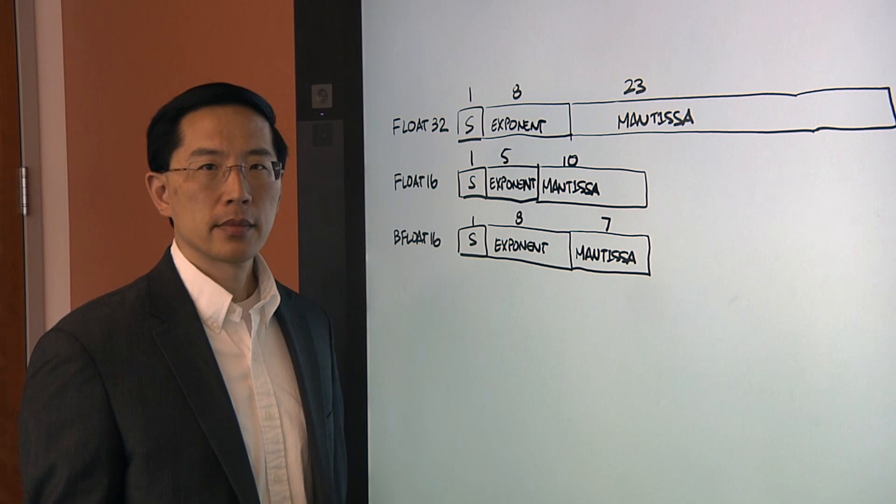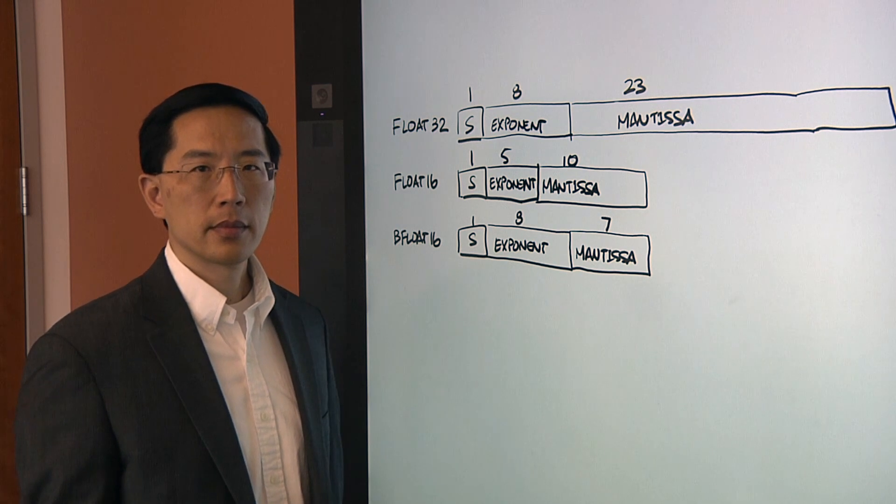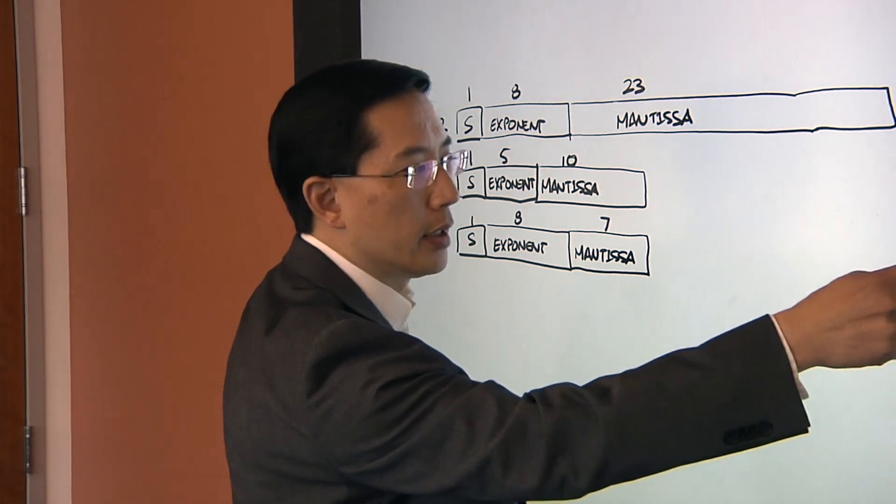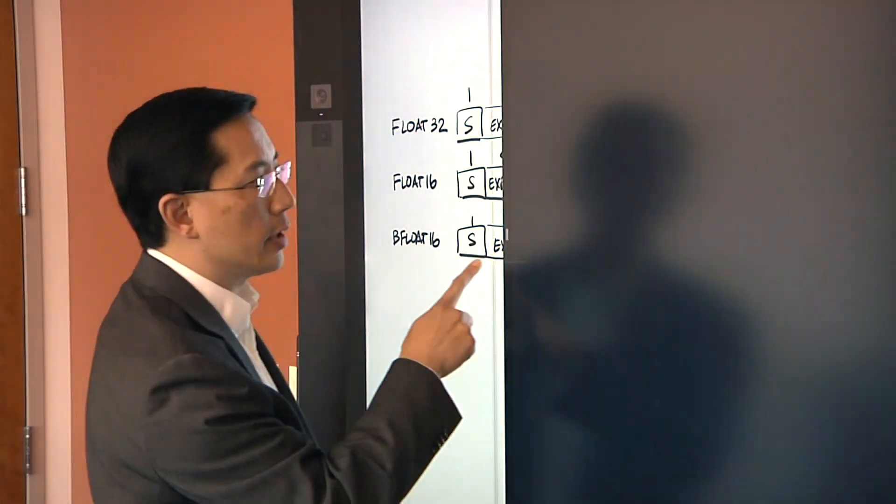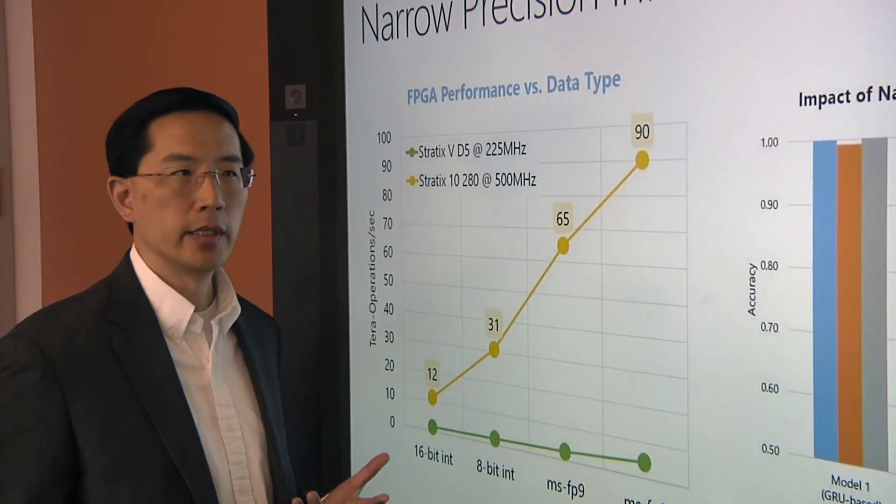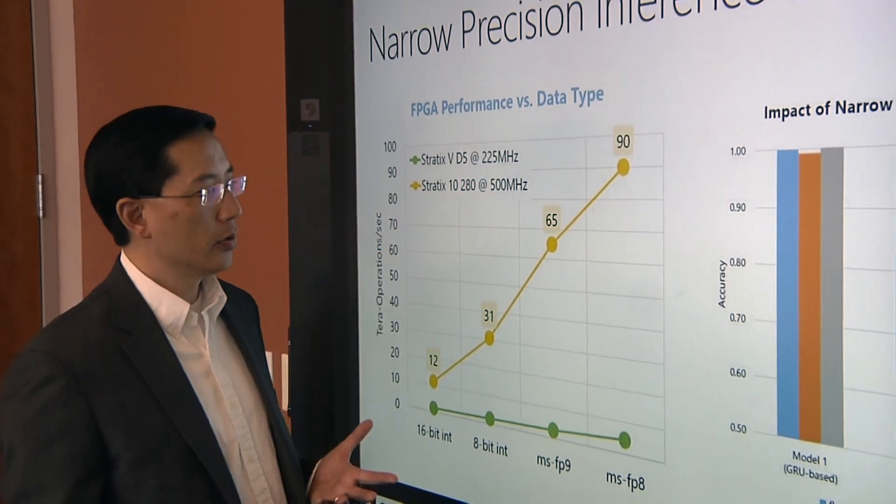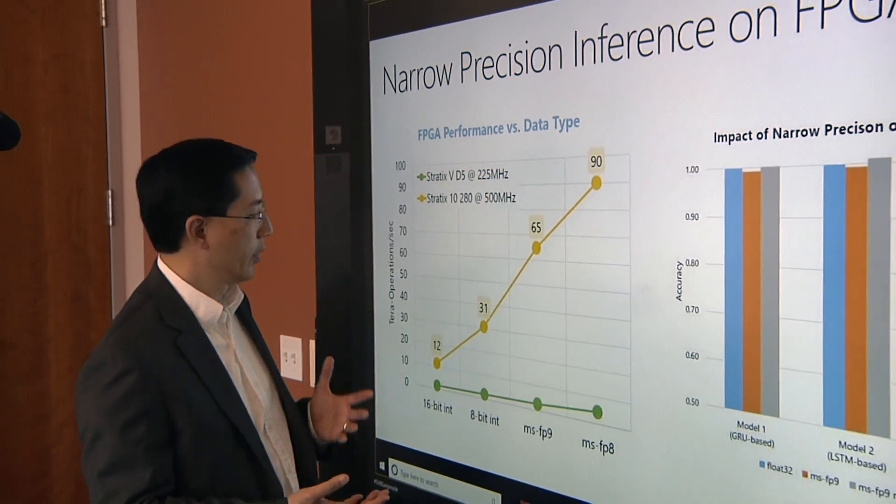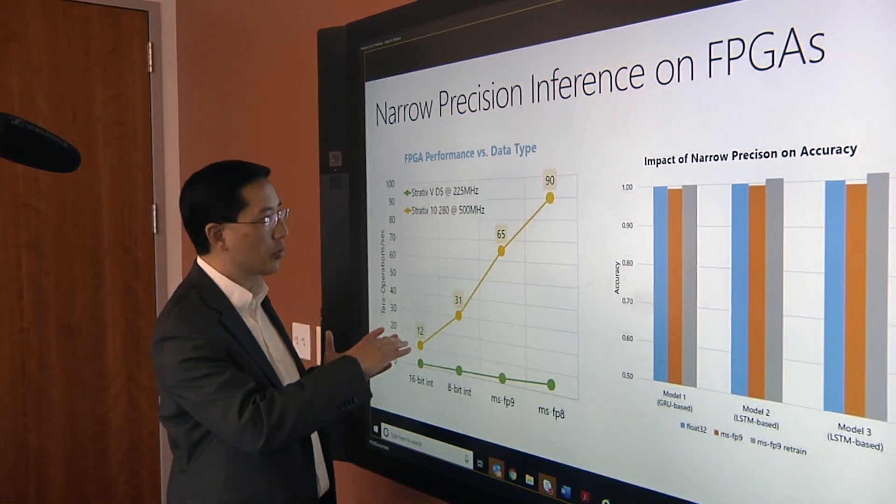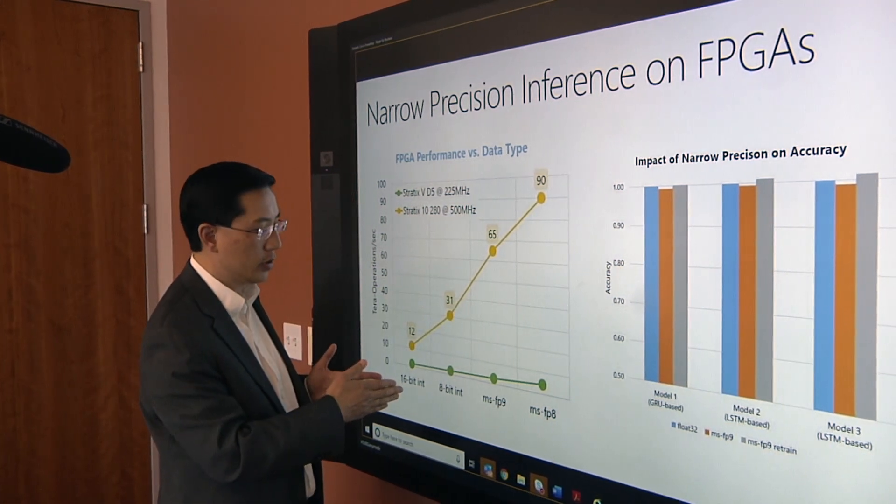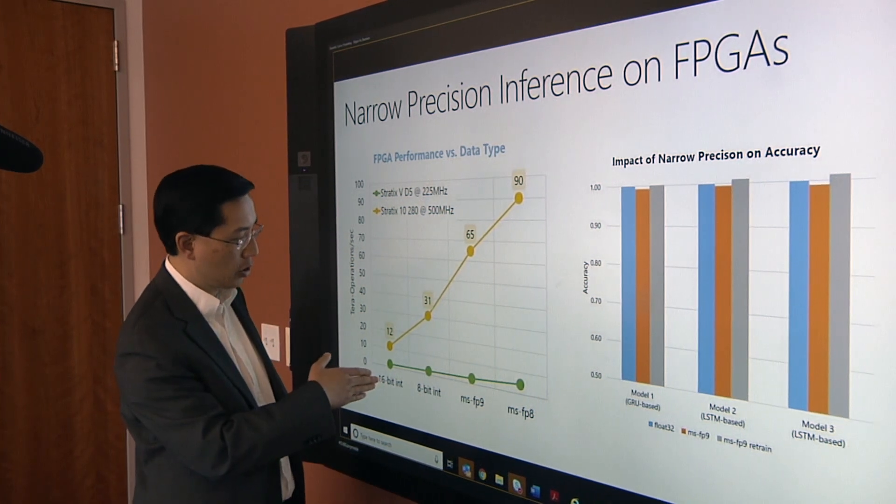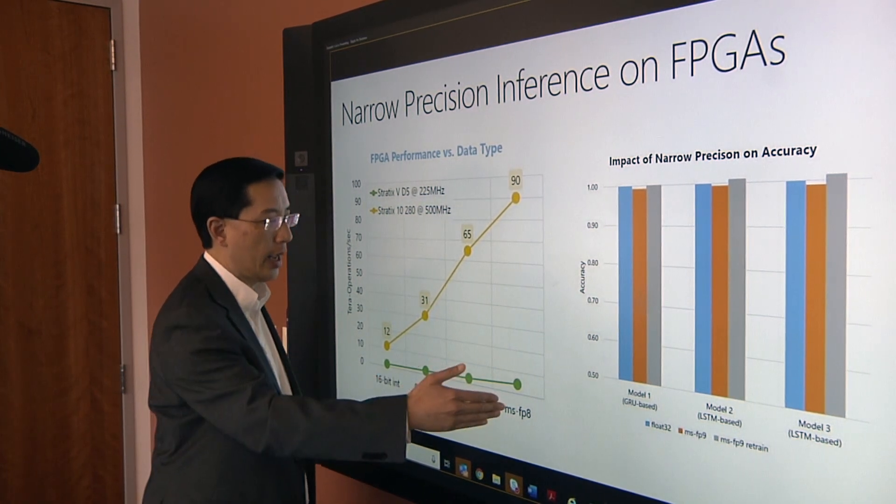So taking all this into account, how much does this really improve performance and how much of an impact is there on accuracy? That's a really good question, Ed. A couple of years ago at Hotchips, Microsoft showed some very interesting data. And so what they showed was they showed that the performance of some of their neural network engines could improve dramatically when they reduced the precision of the numbers they were working with. And so in this particular case, they show going from 16 bits down to 8 bits.